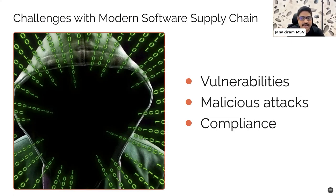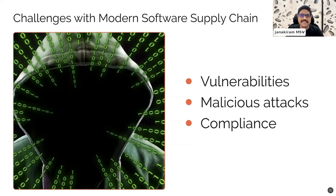And then there is compliance. A lot of governments and enterprises now have certain regulatory and compliance definitions and policies that say if you are using open source software, you have to disclose everything. You have to tell what you are consuming and walk it back — for example, if you are consuming a logging agent, figure out what else the logging agent is consuming and walk back to figure out everything. Show that there are no vulnerabilities and this is a secure way of consuming the software. It is becoming a compliance and regulatory issue for governments and large enterprises.